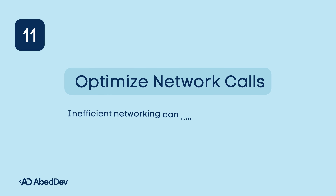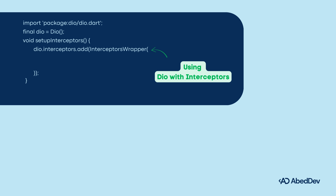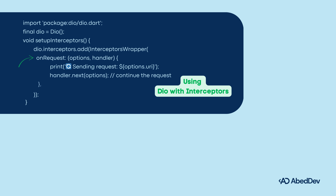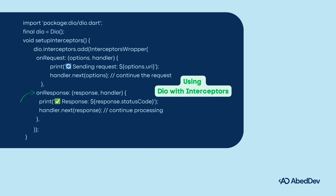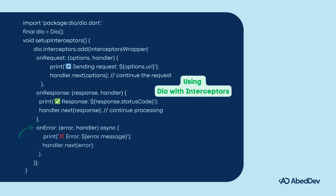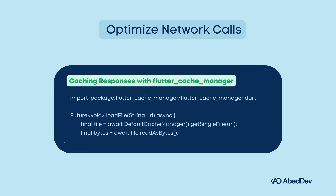Optimize network calls. Inefficient networking can hurt performance and battery life. Use Dio with interceptors for logging and retry. Dio interceptors let you attach logic to your HTTP client: on request, runs before sending — add headers, log the request; on response, inspect or transform the response; on error, retry the request or refresh the token. You can also cache responses with flutter_cache_manager.